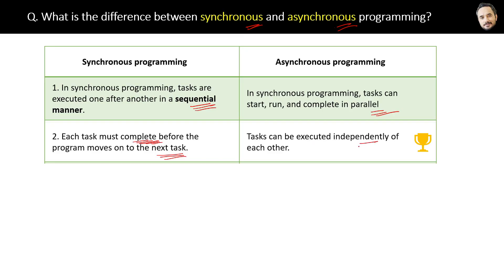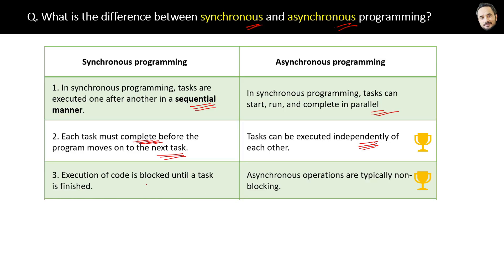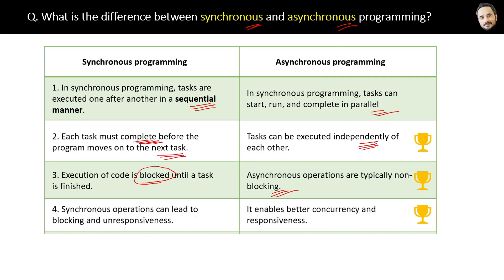Another difference is that execution of code is blocked until a task is finished, whereas asynchronous operations are typically non-blocking. Synchronous operations can lead to blocking and unresponsiveness — for example, one operation taking too much time.